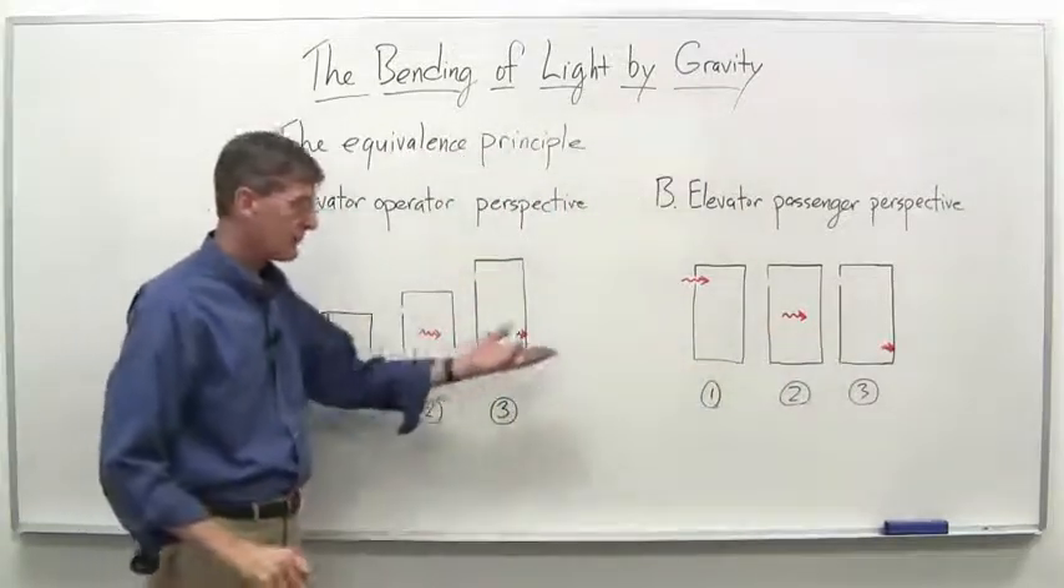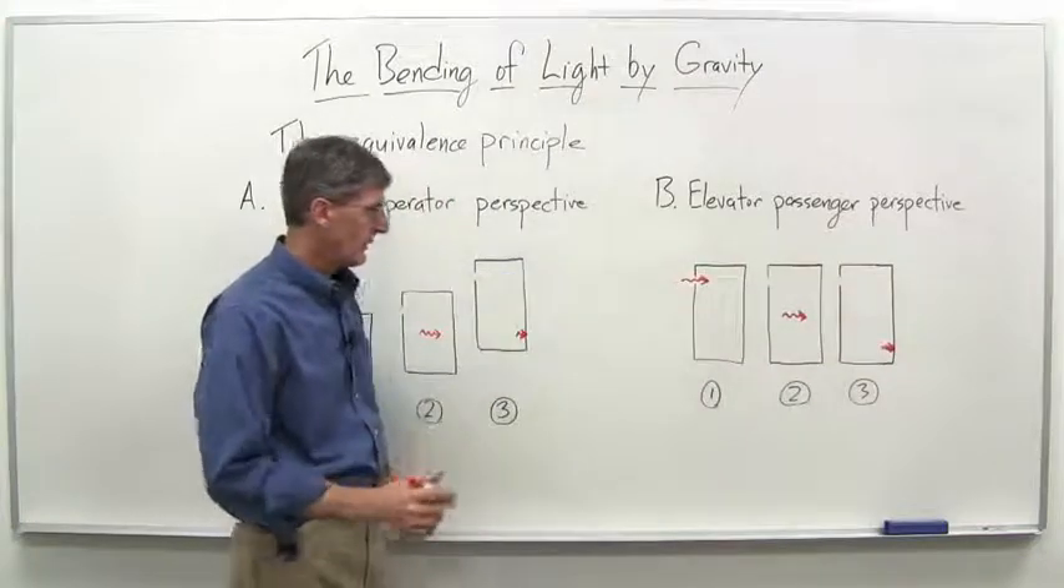In snapshot number three, they both have to agree this is where the light beam hits, right there. And in the middle picture, they both have to agree, if they could take a snapshot there, the light beam's sort of halfway from the top and the bottom. So look at the path of the light beam from the perspective of the elevator passenger here. As we've drawn it, you could say maybe it just goes straight down in diagonal line. In actual fact, because the elevator is accelerating here, the effect gets amplified as it's getting closer to the bottom there. And so the actual path will be a curved path, not just a straight line path. It'll go down something like that and hit there.